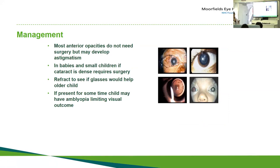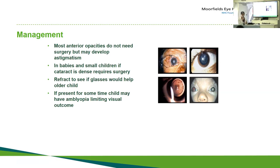If a child has anterior lens opacities, the vast majority will not need surgery. Small white blobs, even in the central axis, are not usually visually damaging. But if cataracts are dense and central, particularly in small children or babies, surgery will be required. Always refract first, as they may benefit from glasses rather than surgery. If the cataract has been present a long time, the vision may not be good due to stimulus deprivation amblyopia, which may itself be a reason not to operate.